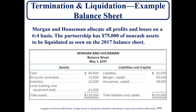We have an example here: Morgan and Houseman allocate all profits and losses on a 60/40 percent basis. The partnership has $75,000 of non-cash assets — not including cash — that we'll have to liquidate. We'll use the proceeds to pay off the liability, and if there's any cash remaining we will close out the capital balances for both partners and terminate the partnership.